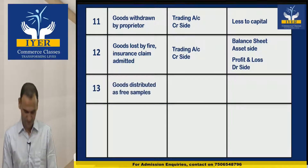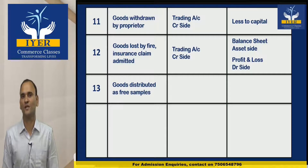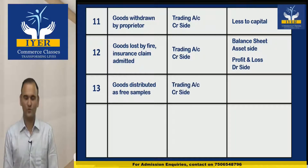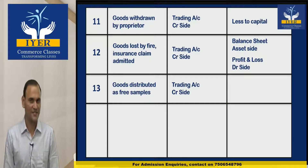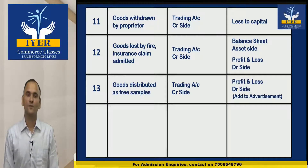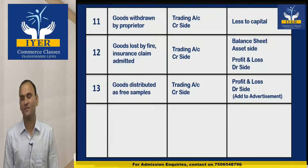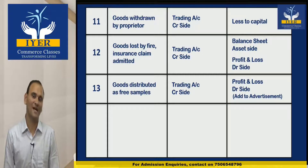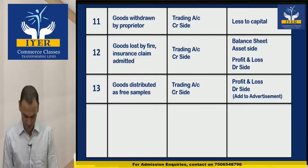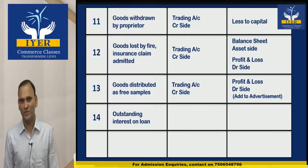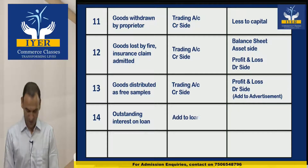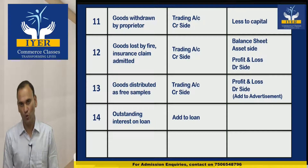The next one is Goods Distributed as Free Samples. The two effects are: Trading Account credit side, and Profit and Loss debit side — add to advertisement.